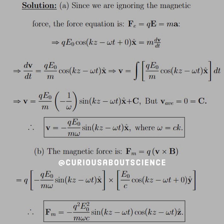That ω and k relationship will be with us all chapter. For part B, the magnetic force is F_m = q(V × B). Since we have V from above, we take the cross product and find the magnetic force is −q²E₀²/(mωc) sine cosine (same arguments) in the z-hat direction, since x-hat cross y-hat is z-hat.